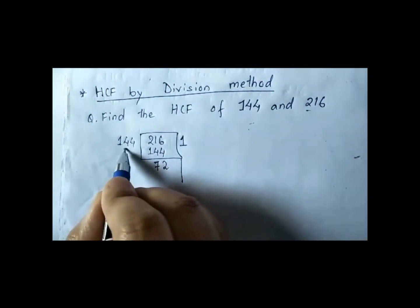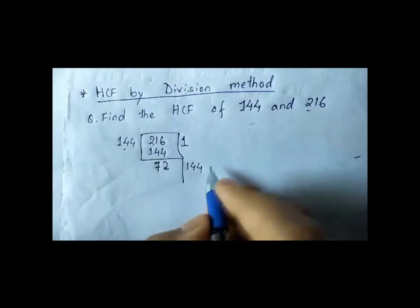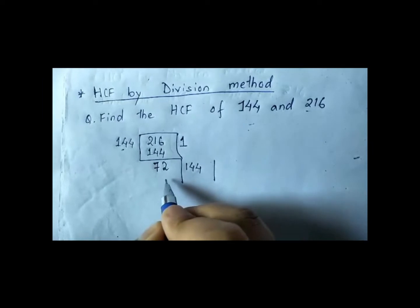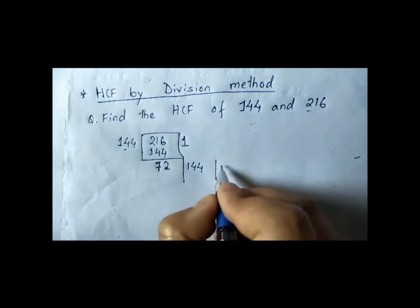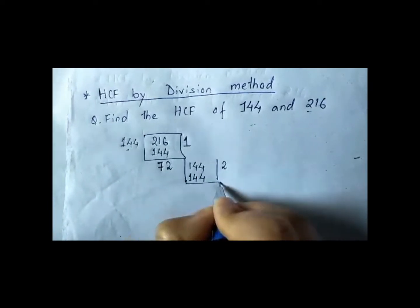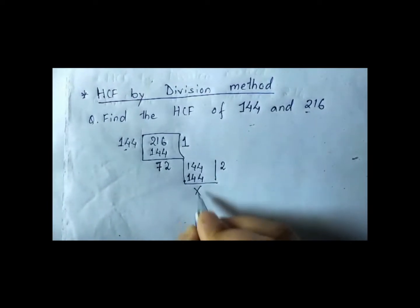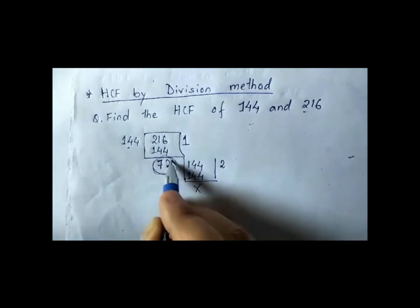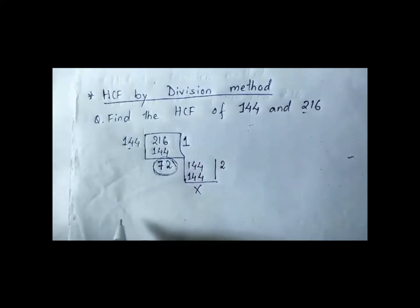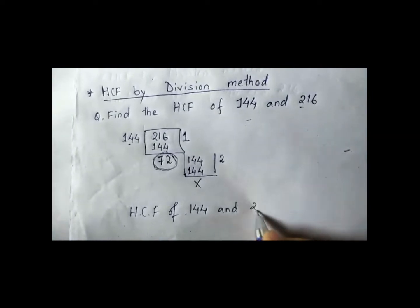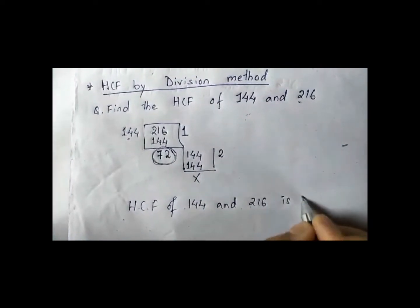Now you have to keep on dividing until the remainder is 0. Now this divisor you have to write here: 72. It goes with 2, and now the remainder is 0. The last divisor of these two numbers is the HCF. So the HCF of 144 and 216 is 72.